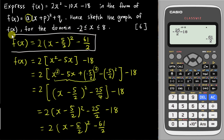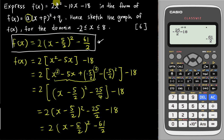To summarize the calculator method: the x value must have its sign changed, the y value can be copied directly, and the 'a' value is always the coefficient of x². For example, if the coefficient of x² were 3, you'd just write 3 there. That's how you solve part one.